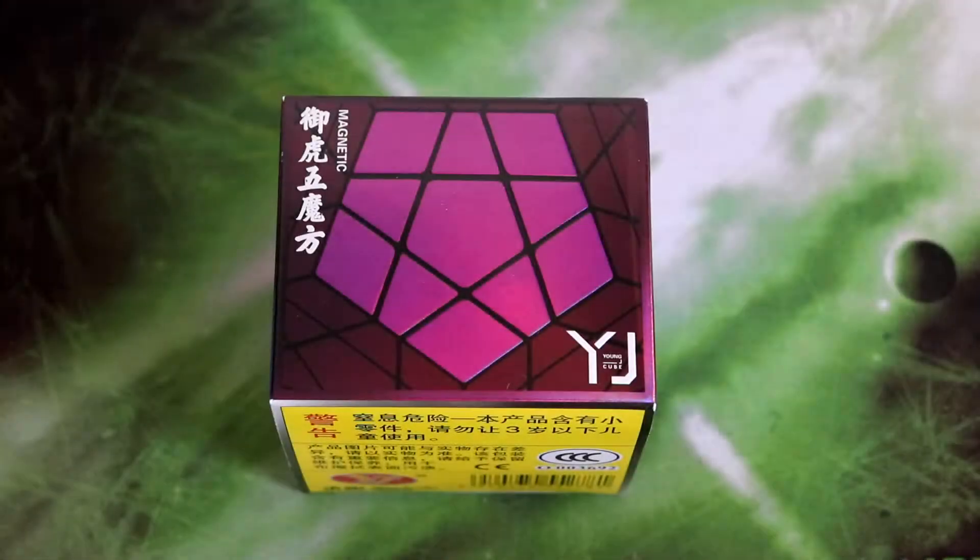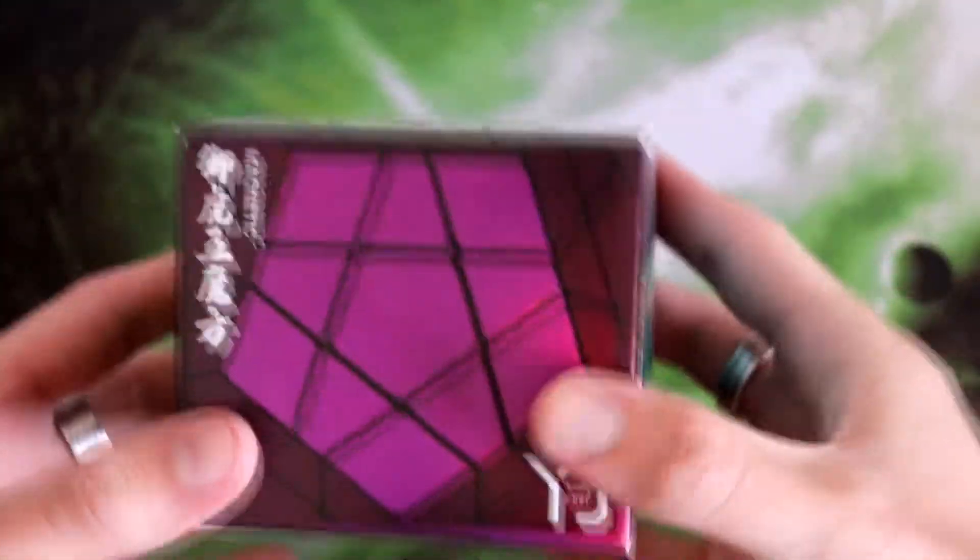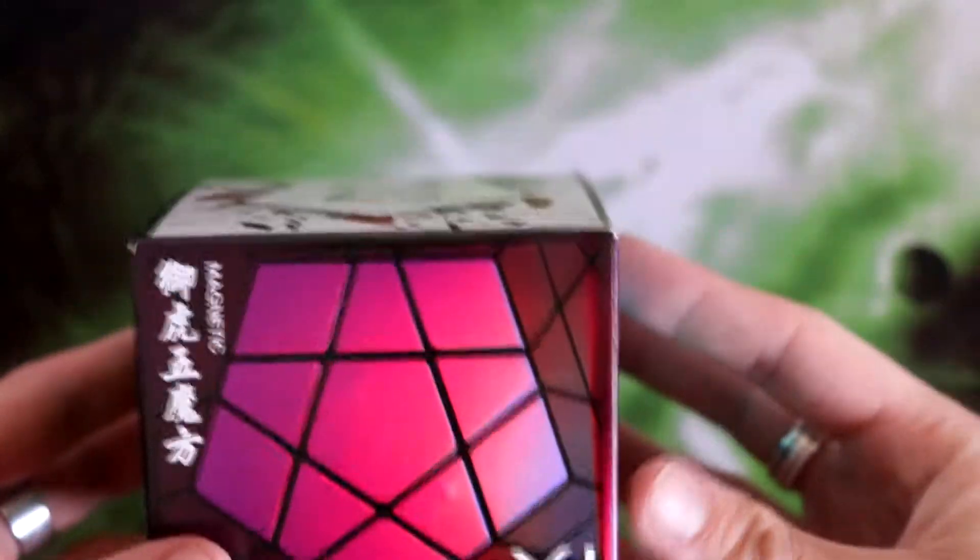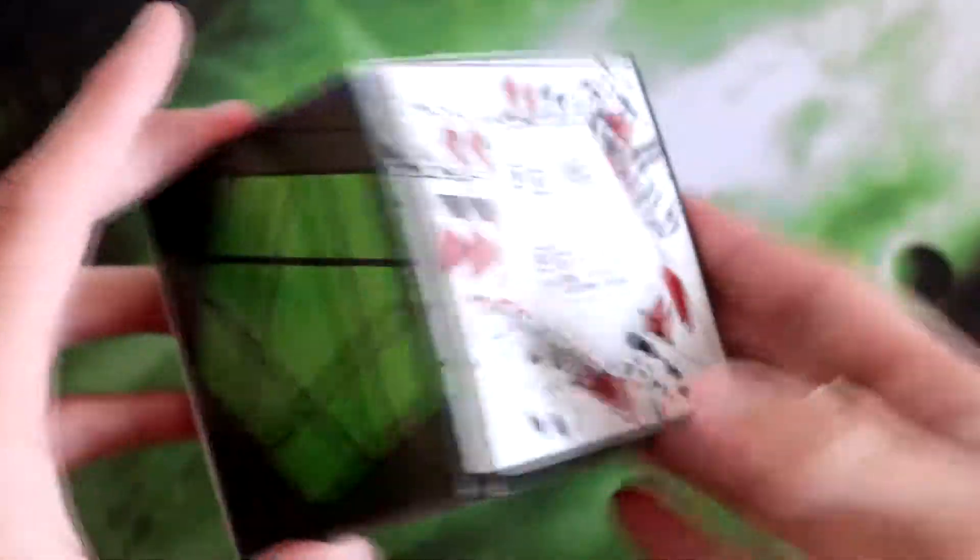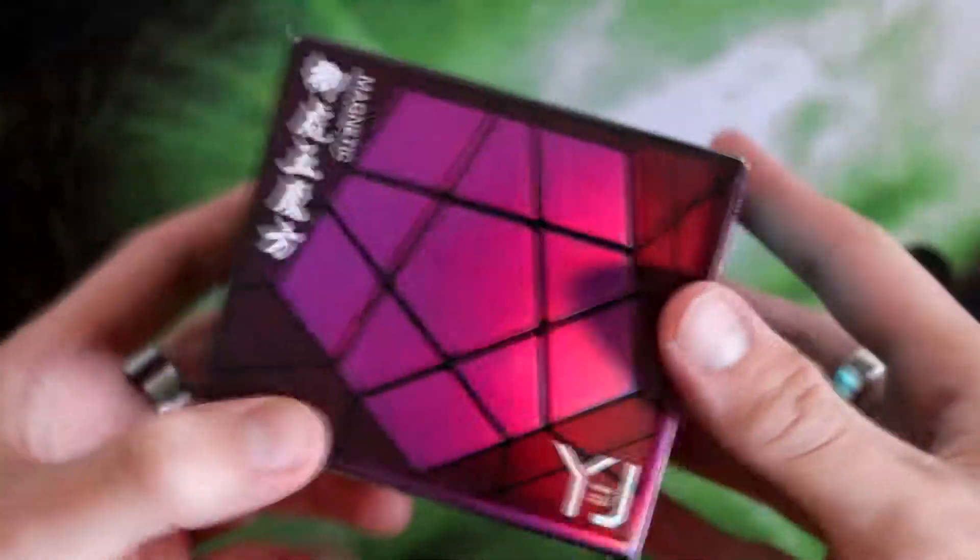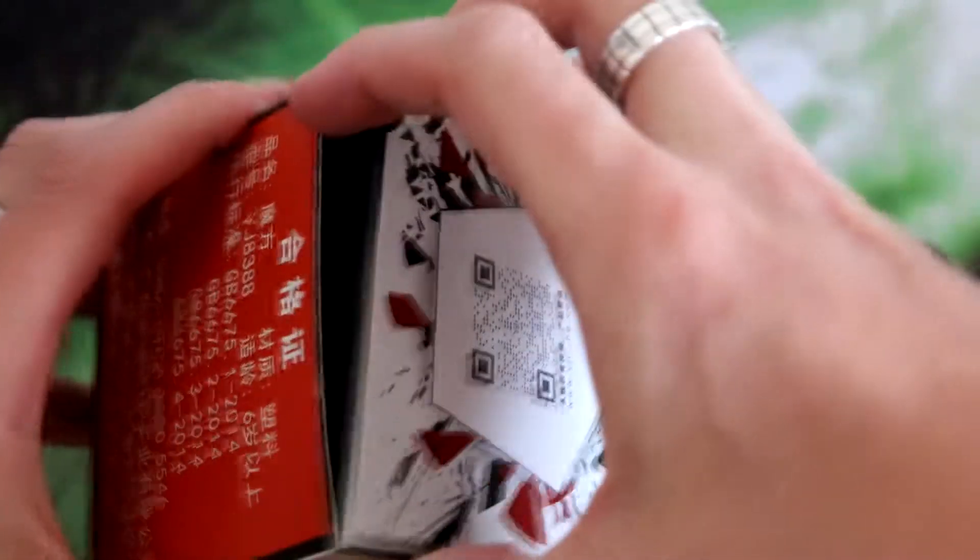So let's get into the unboxing. All right, so let's get into the unboxing of the YJ Yugo V2M. The box is quite large. I like the box actually, it's really cool. So yeah, let's get into it.